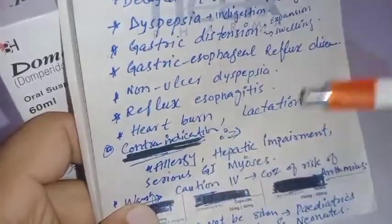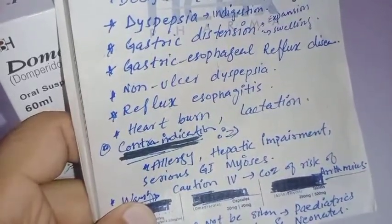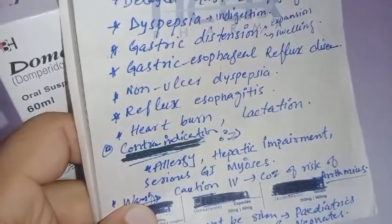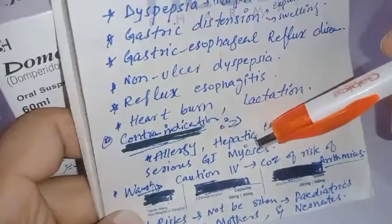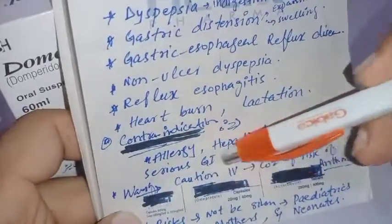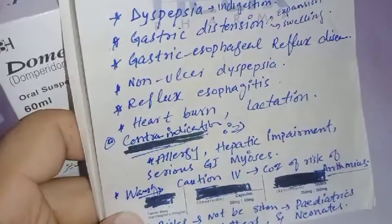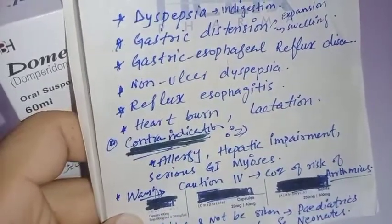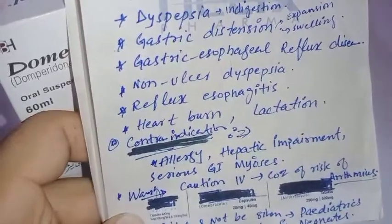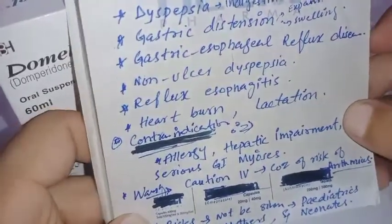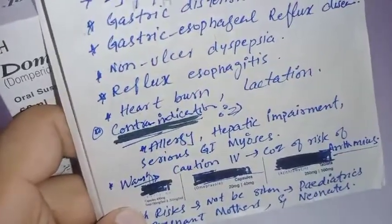Contraindications: we will not give domperidone if the patient has an allergy to it or has hepatic impairment — liver problems. In addition, serious GI mycosis, meaning fungal infection of the gastrointestinal tract, or GI tract inflammation are also contraindications. In these conditions, we will not give this drug to the patient.